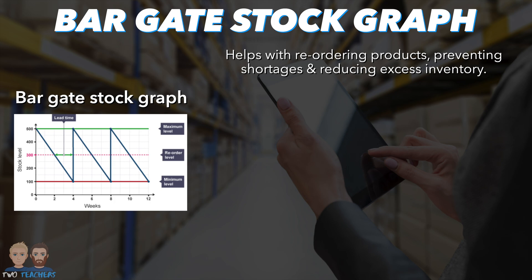On the screen you can see a graph with the stock level on the vertical y-axis and the time period in weeks displayed on the horizontal x-axis. This graph provides four key pieces of information that help businesses understand their stock levels at specific times.